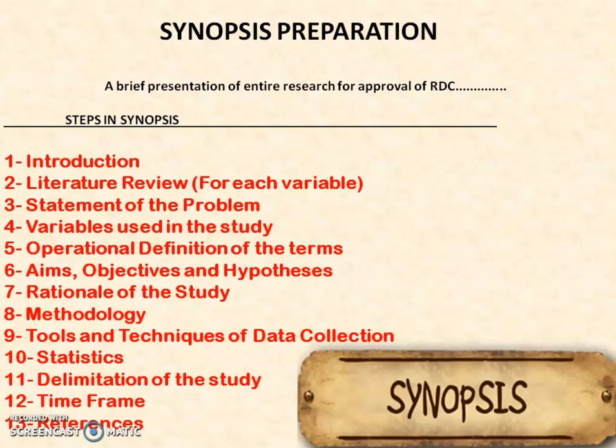Sixth is aims, objectives, and hypothesis — your aims, objectives, and hypothesis should be clear, precise, and accessible. Seventh is the rationale of the study. You must put some rationale explaining why you have undertaken this study. There should be reasons behind it and some problem which you are going to state in your rationale.